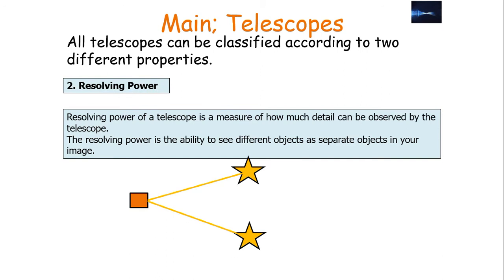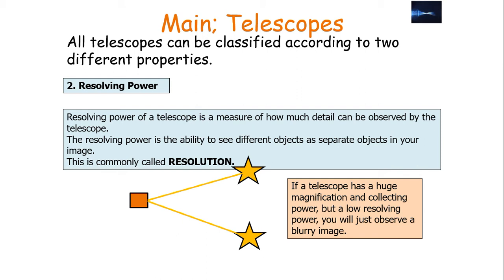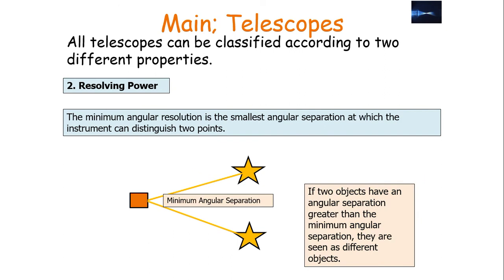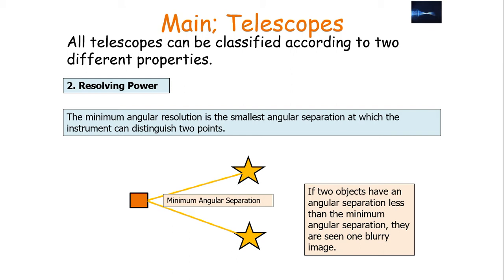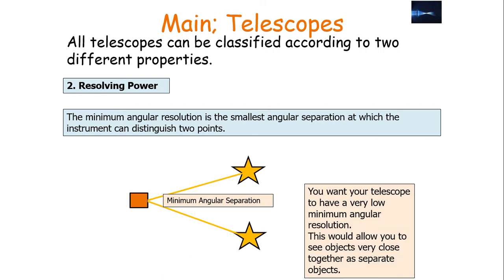The resolving power of a telescope is a measure of how much detail can be observed — it is the ability to see different objects as separate objects in your image, commonly called resolution. If a telescope has a huge magnification and collecting power but a low resolving power, you will just observe a blurry image. The minimum angular resolution is the smallest angular separation at which an instrument can distinguish between two points or objects. If two objects have an angular separation greater than this minimum, they are seen as separate objects; if less, they appear as one blurry image.